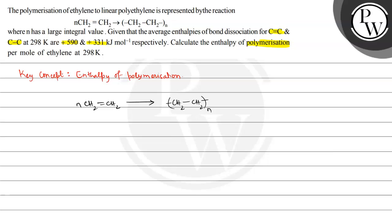What is happening in this reaction? One double bond is breaking and two single bonds form per mole of ethylene, because here we have CH2-CH2 and on both sides there are two bonds which are part of the polymer. We can consider these two single bonds as one bond for the purpose of calculation.